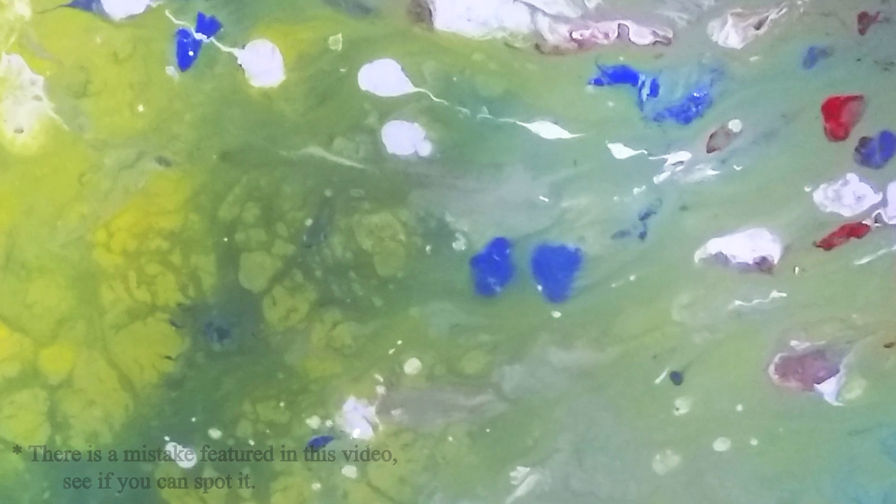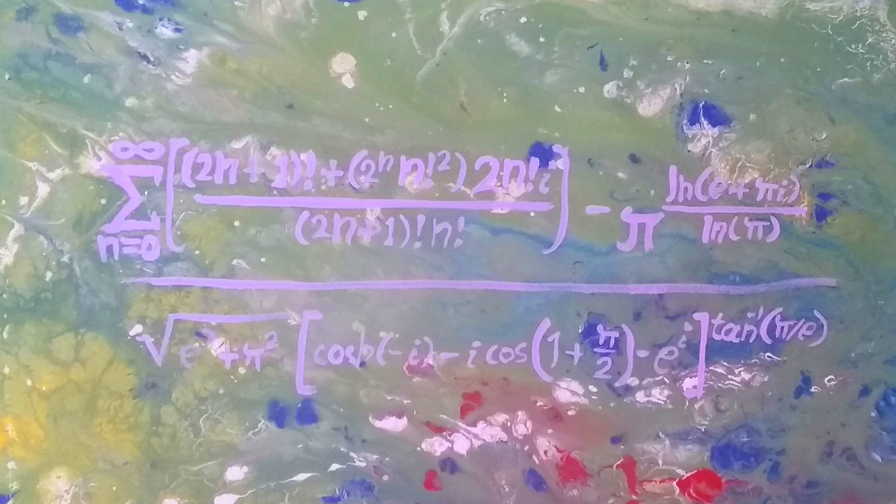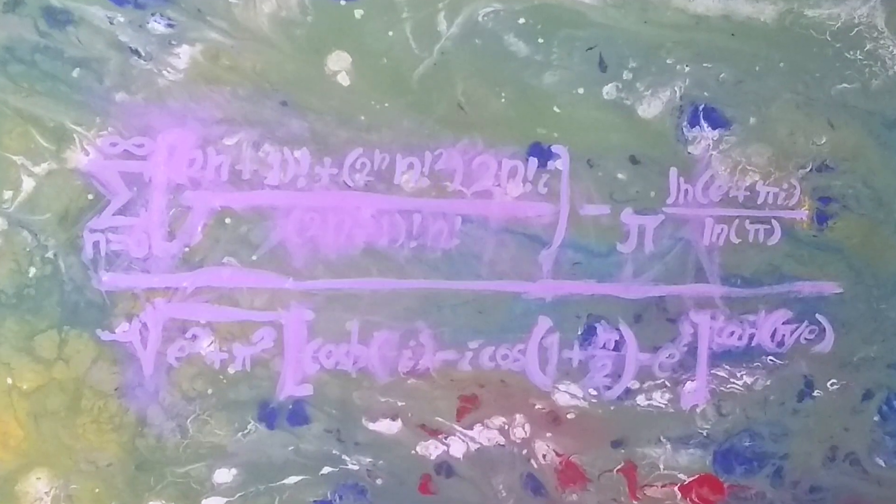Once I had the rough image it was time to slap on the equation. I wasn't too happy with the lavender at first so I gave it a little smudge. Then came the black sharpie.